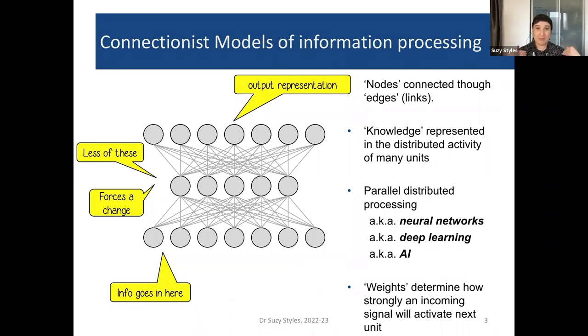Throughout these slides, we will be representing incoming information as going into input nodes at the bottom and the outcomes of the processing system as that row of nodes at the top where we will see our output representation. In between the input layer and the output layer, we may have supplementary layers in between known as hidden layers.